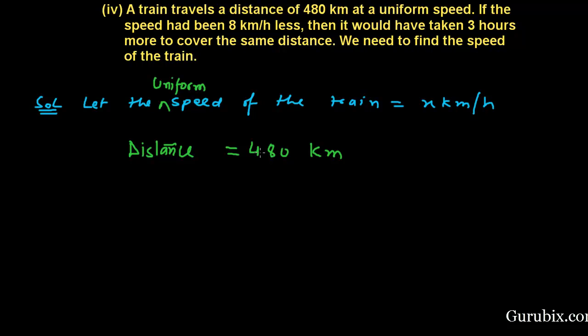Let us construct the equation from this statement. In both conditions, the distance is 480 km. If the train travels 8 km/h less, then we shall write it as x minus 8. And this is usual speed. We know that distance upon speed equals time. Here is also time.